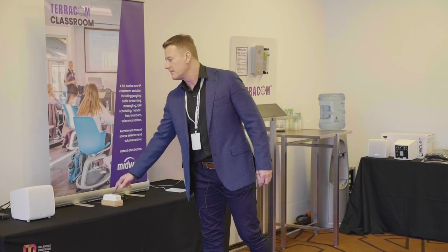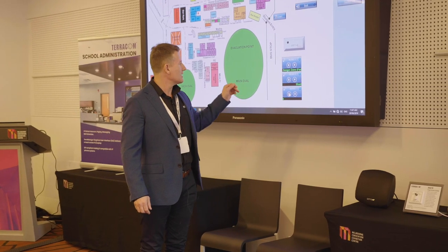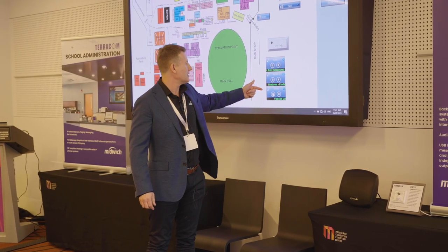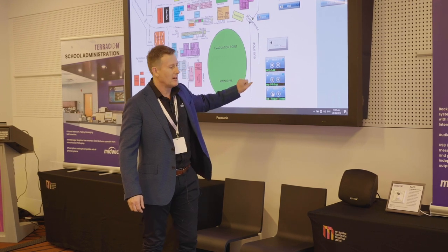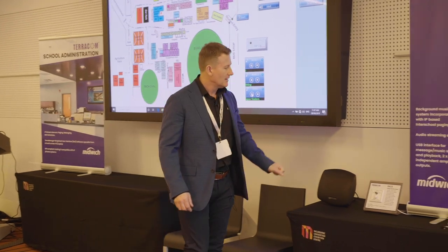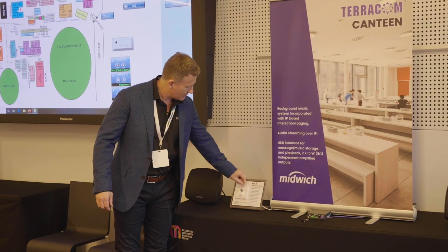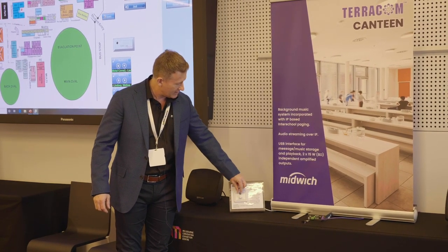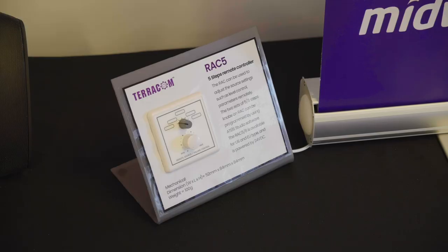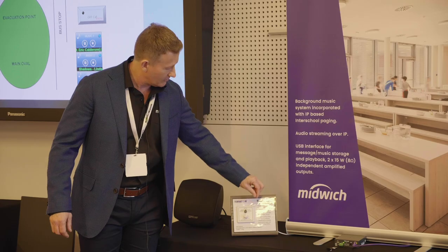This is all running off a single Terra FDX box. Terra Manager can also stream music — we have three music players in our Terra Manager software that are multicasting MP3 tracks. We can select those three tracks from our wall controller here, the RAC 5, so this lets us select which music track we want to listen to, and we also have a volume control.